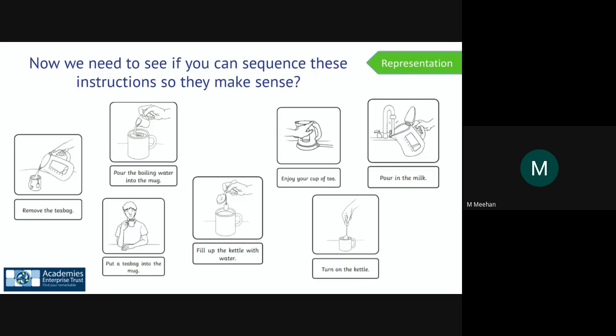Well done for that task. That was a little bit of a warm-up. Now, what I would like you to do is see if you can sequence these instructions so they make sense. We've been able to identify the key features of an instruction text. And now, we need to be able to sequence an instruction text. It's how you make a cup of tea. Can you get your grown-up to help you? Or you can write them in order yourself and obviously send me the pictures. Can you put these in order? So, we've got a very clear set of instructions.